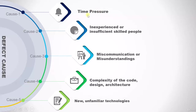To recap, the five causes are: first, time pressure; second, inexperienced or insufficiently skilled people; third, miscommunication or misunderstanding; fourth, complexity of the code, design, and architecture; and the last one is when new or unfamiliar technology is introduced.